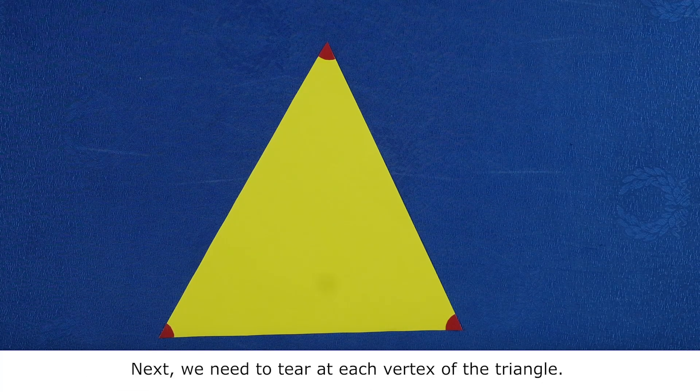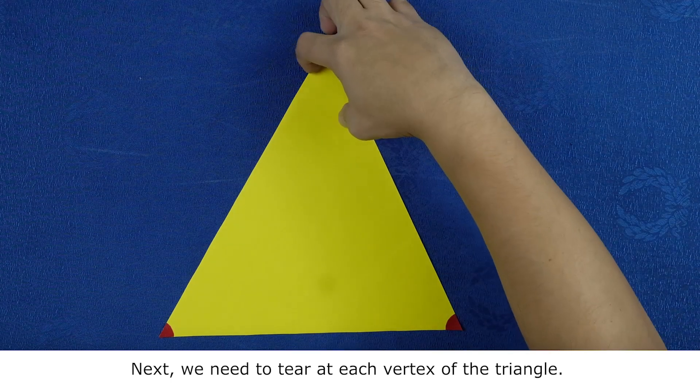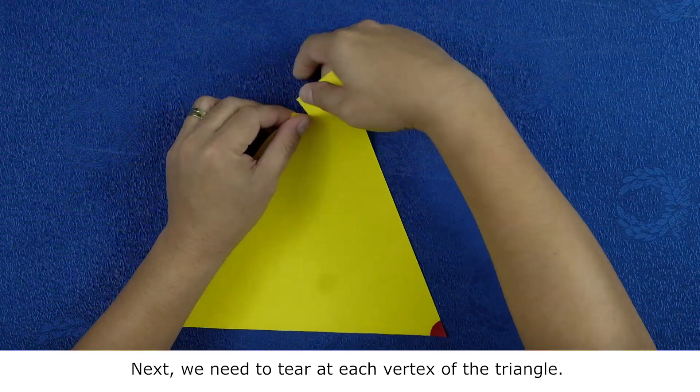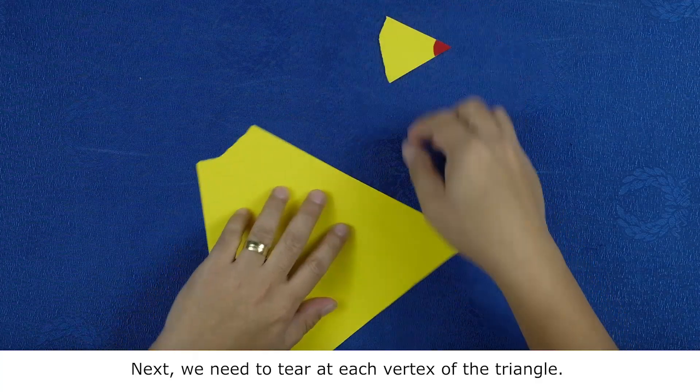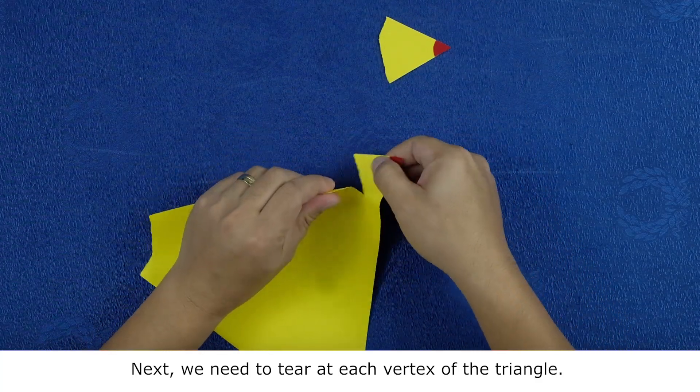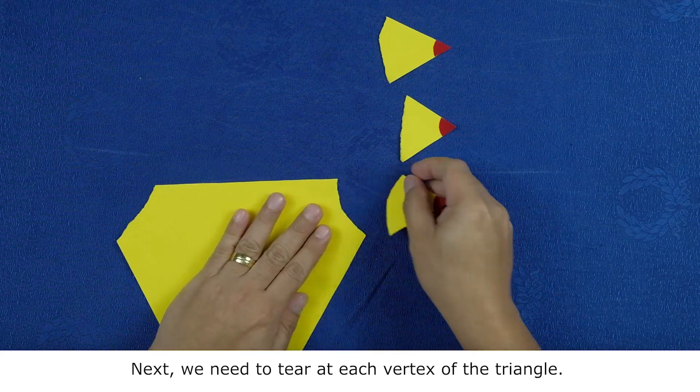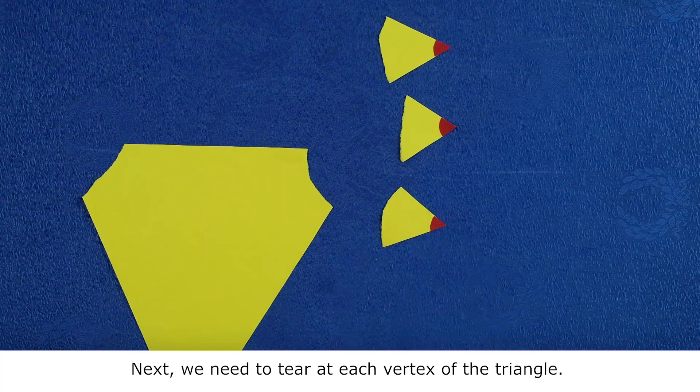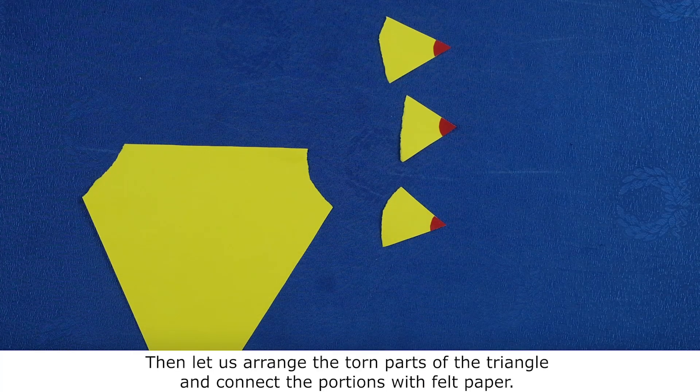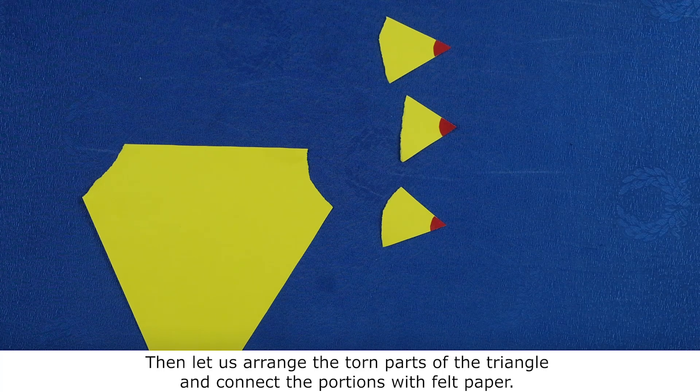Next, we need to tear at each vertex of the triangle like this. Then, let us arrange the torn parts of the triangle and connect the portions with felt paper.